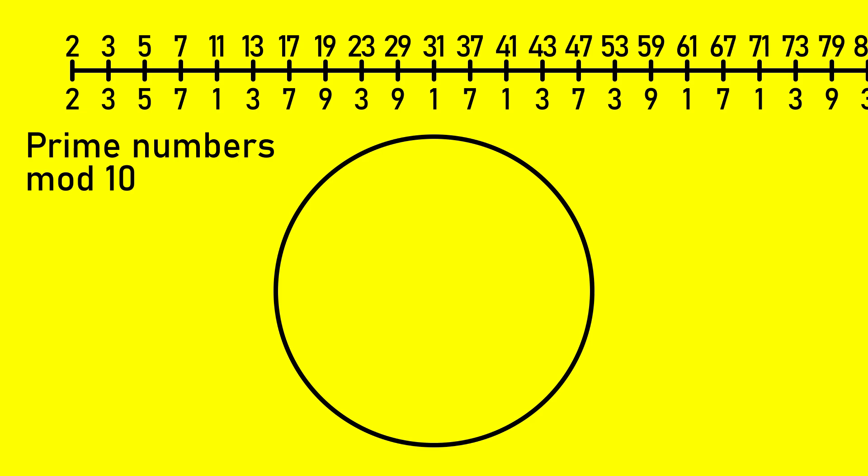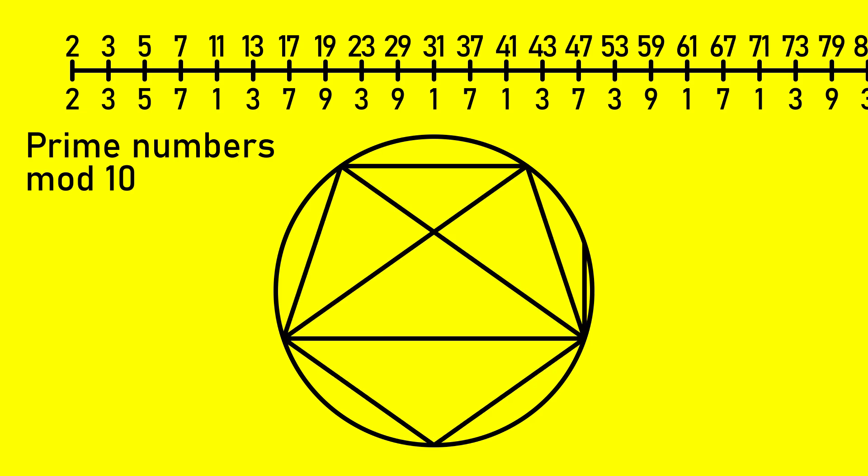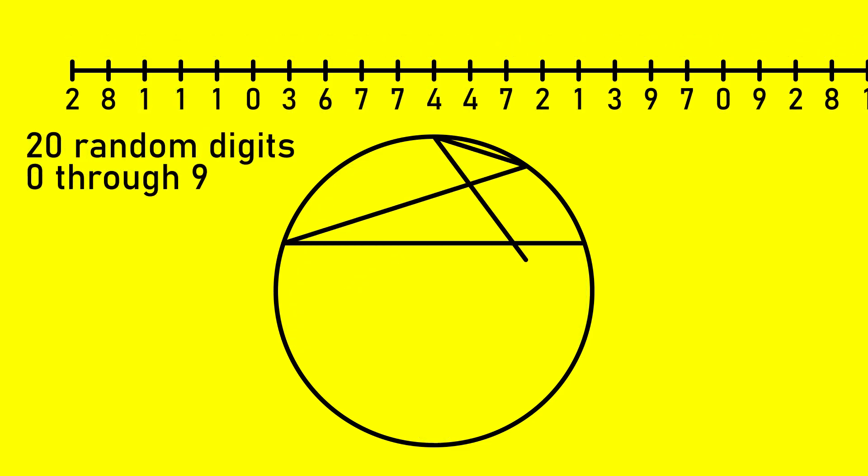If we decided to use prime numbers, the sequence of remainders does not loop, yet it just happens to contain mainly only one, three, seven, and nine for whatever reason. And of course, nothing's preventing you from just picking random remainders and seeing what shape they happen to make.